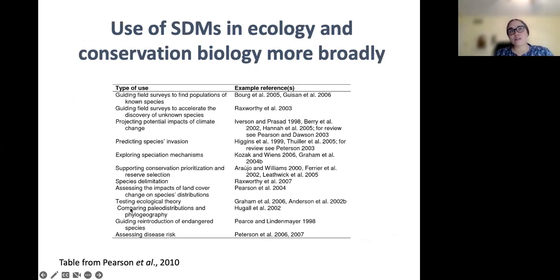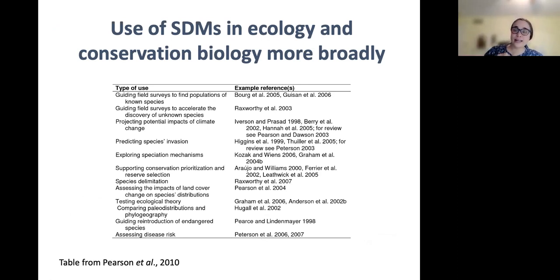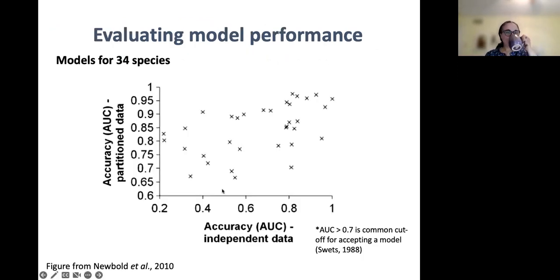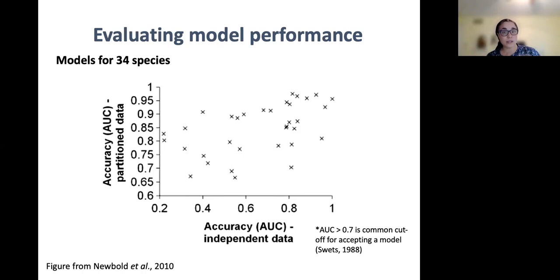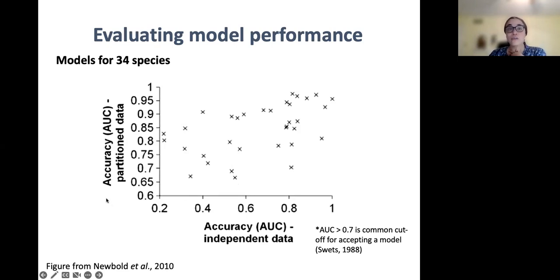These models are used very widely in ecology and conservation biology for a number of different purposes. Before I get into the models we're specifically generating for the salamanders in Alberta, I'd like to tell you about some results from a recent review that colleagues and I conducted, scrutinizing the performance of these models more generally. In contrast to the Bellis et al. study, there's some indication from the literature that we often overestimate the accuracy and thus the ultimate utility of these models. This is a figure from Nuvault et al., where they looked at the commonly used model evaluation metric, AUC, or area under the receiver operating curve, for models generated for 34 species of Egyptian reptiles, amphibians, butterflies, and mammals.